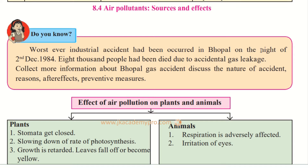Do you know the worst-ever industrial accident occurred in Bhopal on the night of 2nd December 1984? A poisonous gas leaked from a factory in Bhopal, and 8,000 people died due to the accidental gas leak. It happened at night while people were sleeping, so large numbers were affected before they could respond. The effects are still felt today, with soil and air remaining polluted even after nearly 30 years.